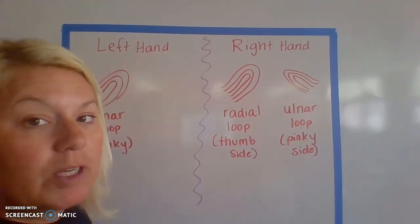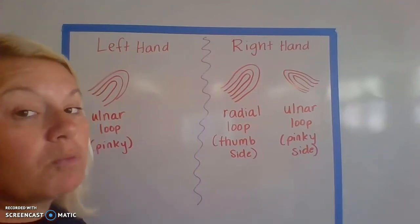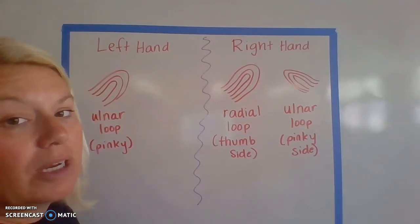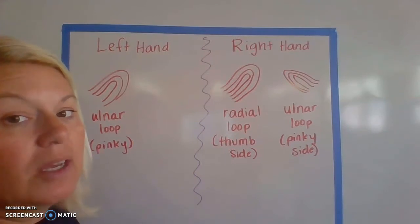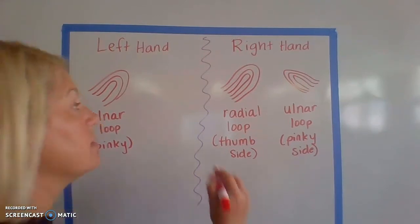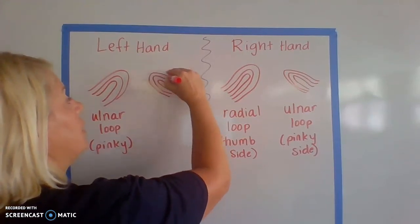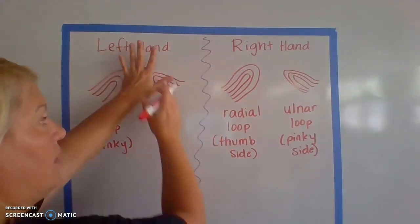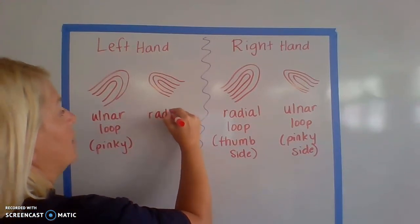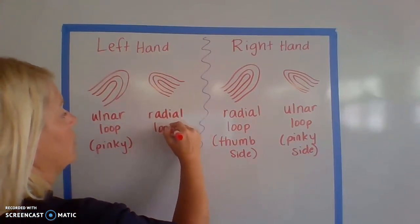And then on my left hand, if the fingerprint is entering and exiting from the right side of the print, that now becomes the thumb side of my hand or where my radius bone is. So if it's entering and exiting from the right hand side, if I put my hand up there, that's where the radius bone is. That now becomes a radial loop.